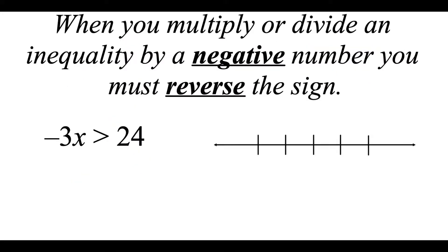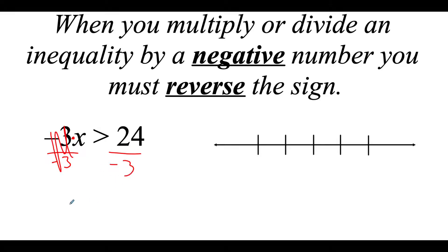Sometimes when multiplying or dividing you have to use a negative number, and anytime you multiply or divide an inequality by a negative number you have to flip the inequality symbol around. Here we've got negative 3x is greater than 24, which means negative 3 times x. To get rid of that we divide both sides by negative 3 — since we're dividing by a negative we flip the symbol from greater than to less than. Then 24 divided by negative 3 gives us negative 8.